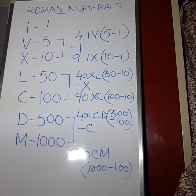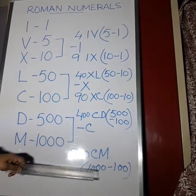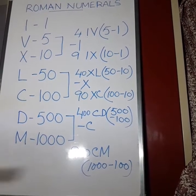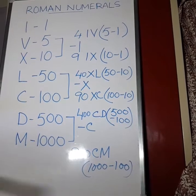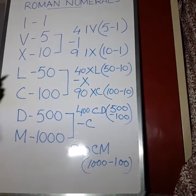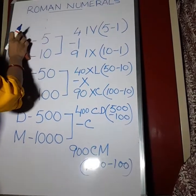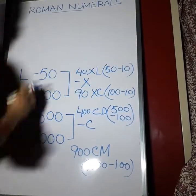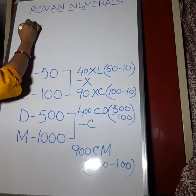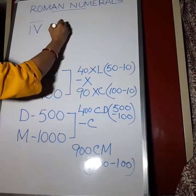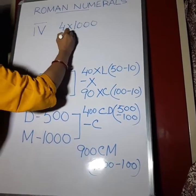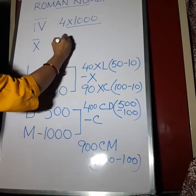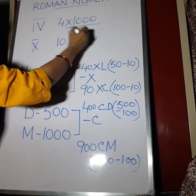We can repeat numbers up to 3000. For 4000 onwards, we use a bar symbol because there is no symbol for 5000 from which M can be subtracted. A bar over a number means multiplied by 1000. So 4 with a bar is 4000, and X with a bar is 10,000.